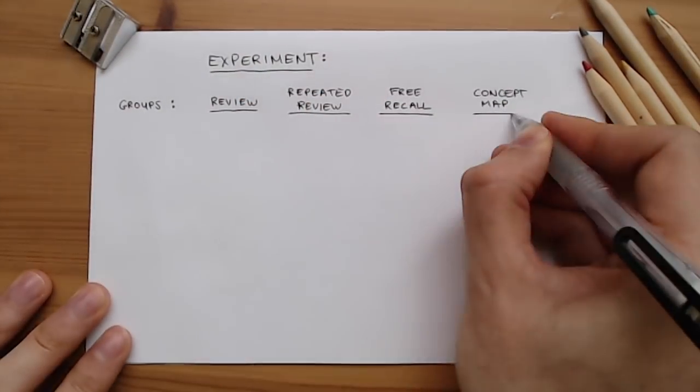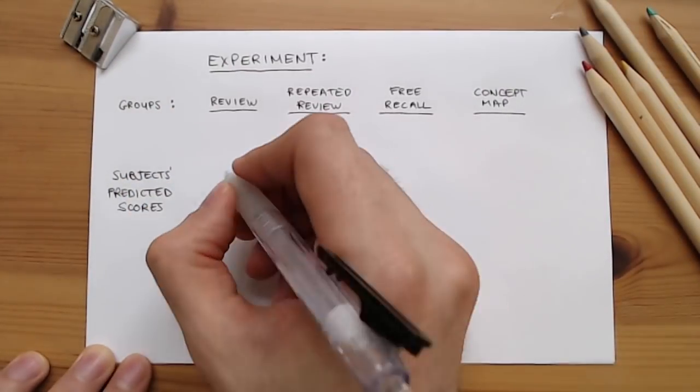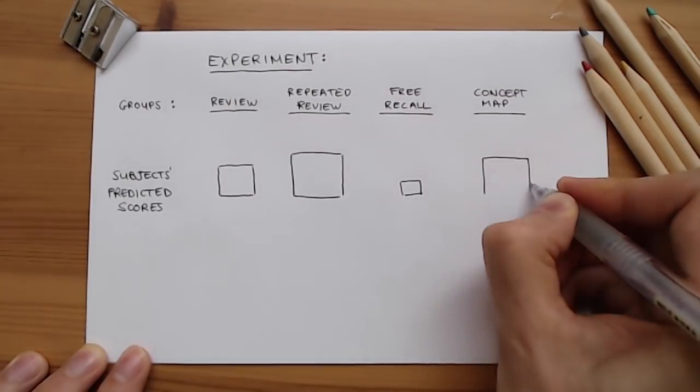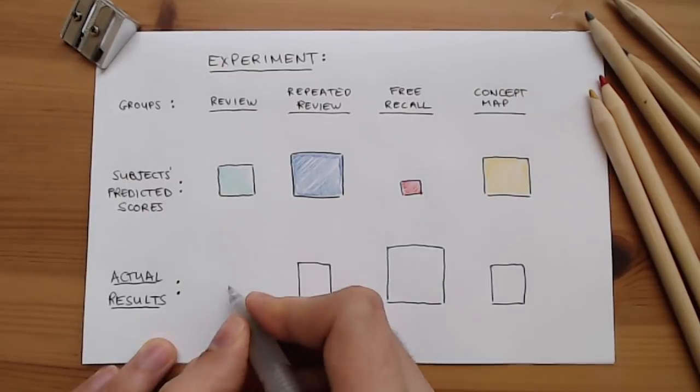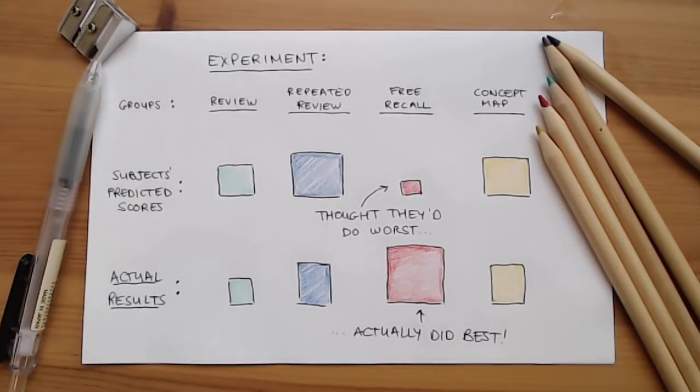So which do you think did best? Before I answer that, let me tell you what the subjects themselves thought. Those who did concept mapping and repeated review thought they understood it best, with those doing free recall expecting the worst grade. What really happened? The exact opposite. Free recall did much better than the other groups, even though the students themselves expected to score the lowest grades.